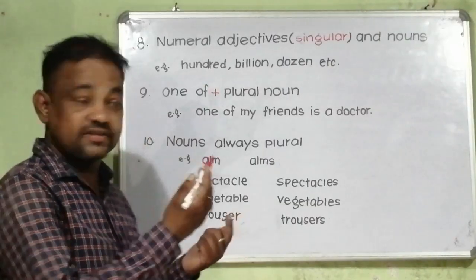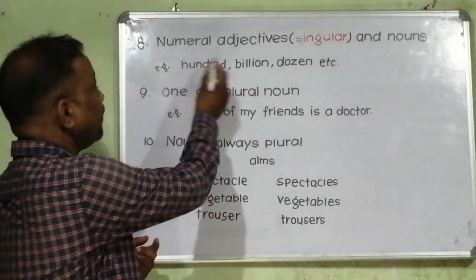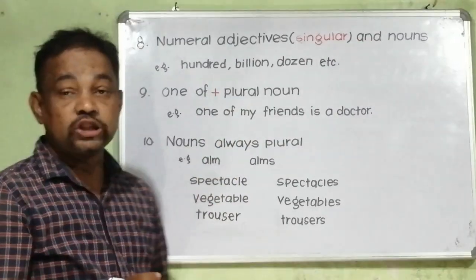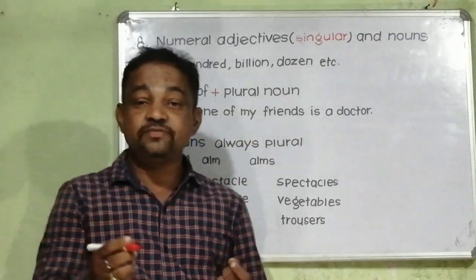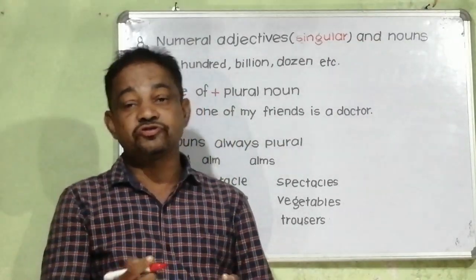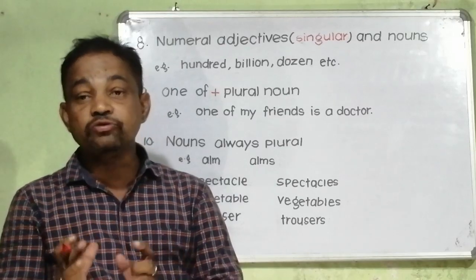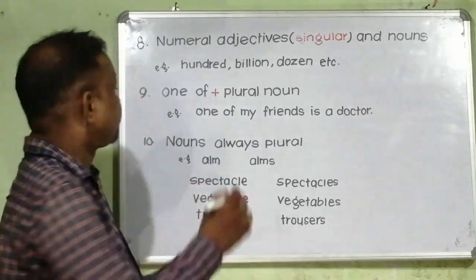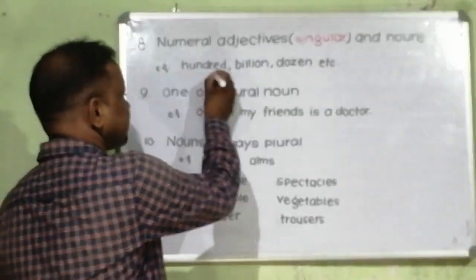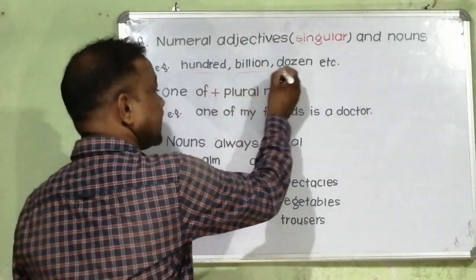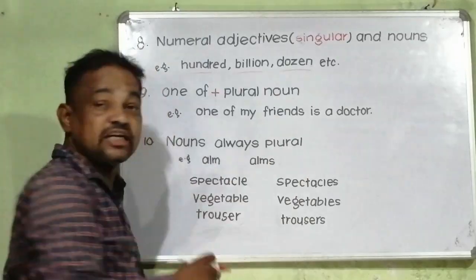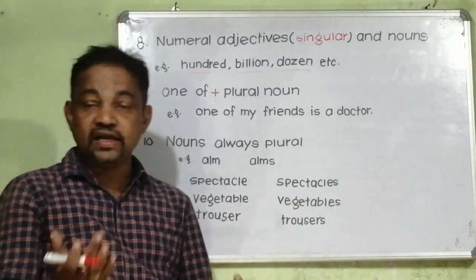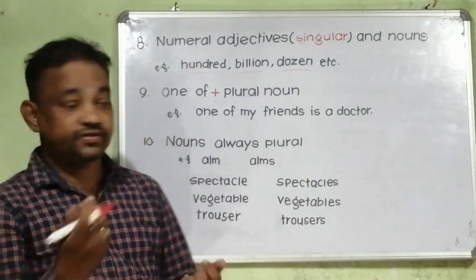Rule number eight: numeral adjectives and nouns. Numeral adjectives cannot be used in their plural forms; you have to use them in their singular forms. For example, hundred, billion, dozen. You cannot write hundreds, billions, and dozens.